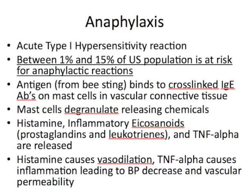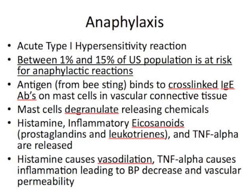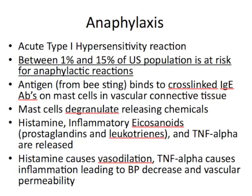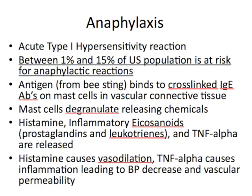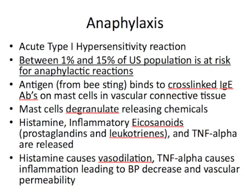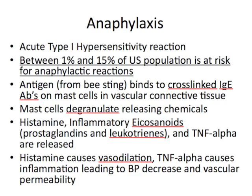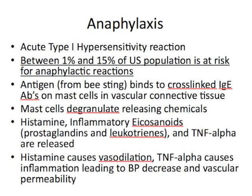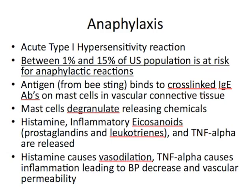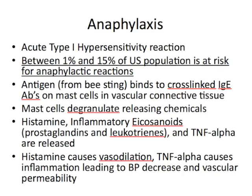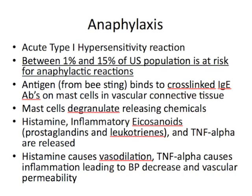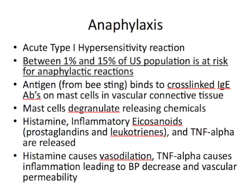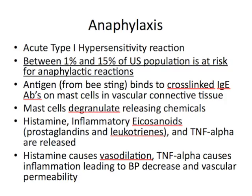In the basic mechanism, an antigen — in our particular case from a bee sting — binds to cross-linked IgE antibodies on mast cells in the vascular connective tissues. These mast cells degranulate and release chemicals, including histamines, cytokines, and other inflammatory molecules, which cause vasodilation and other problems with the vessels. TNF-alpha leads to a blood pressure decrease and vascular permeability. Our patient had a 65 over 35 blood pressure when she was brought in, and she had edema.